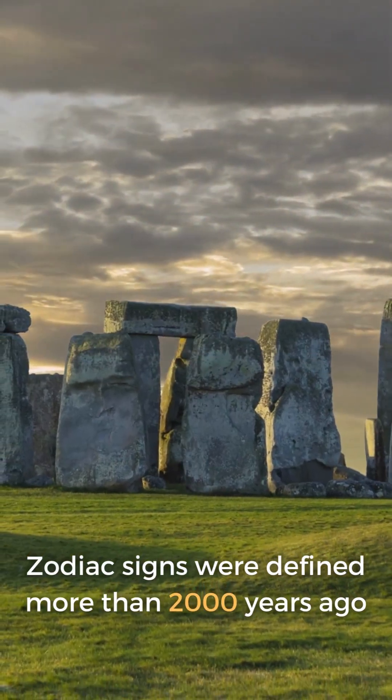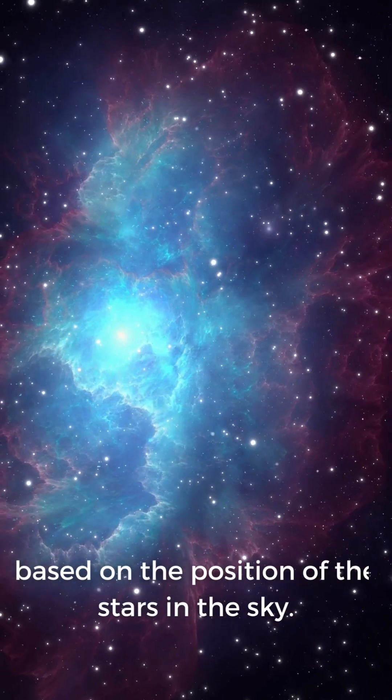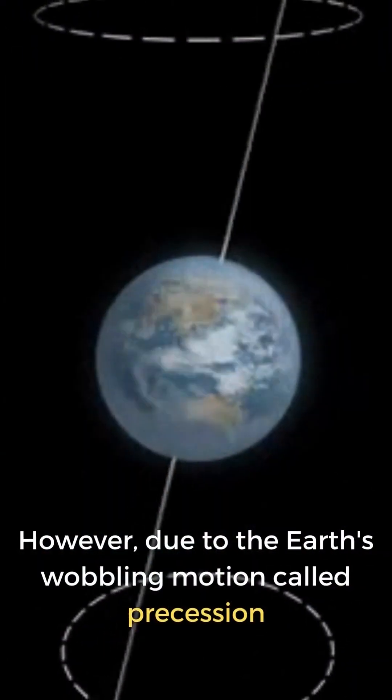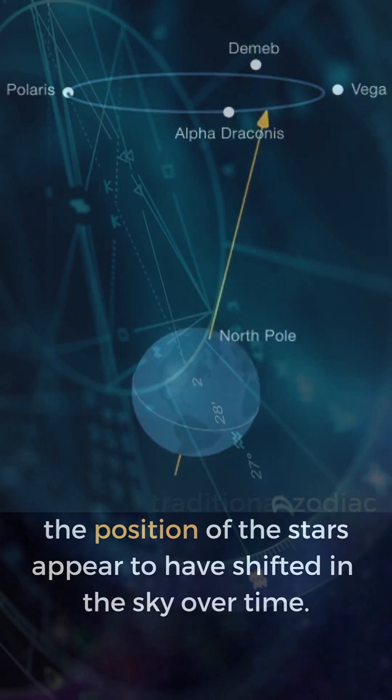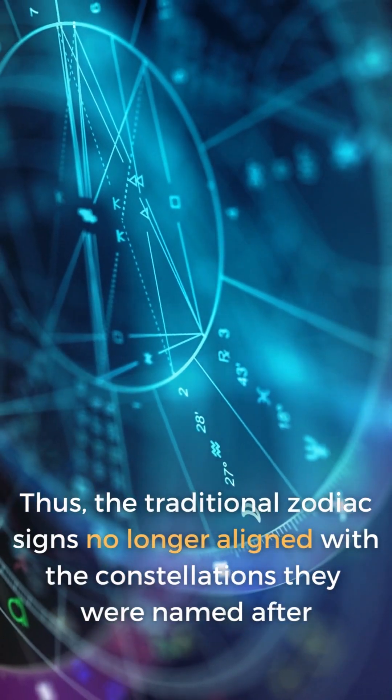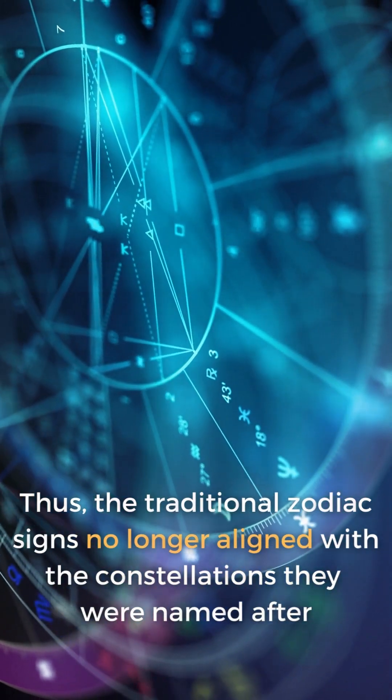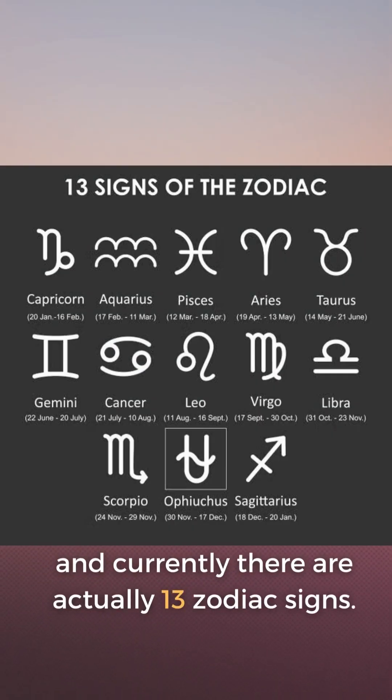Zodiac signs were defined more than 2,000 years ago based on the position of the stars in the sky. However, due to the Earth's wobbling motion called precession, the position of the stars appear to have shifted in the sky over time. Thus, the traditional zodiac signs no longer align with the constellations they were named after, and currently there are actually 13 zodiac signs.